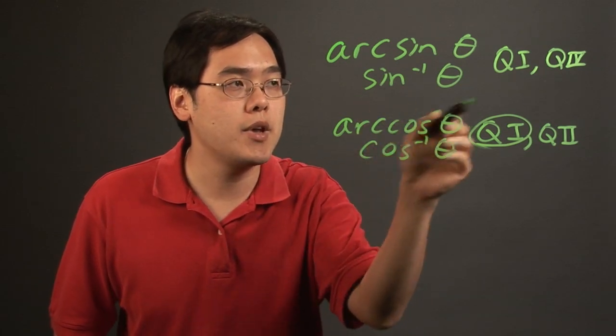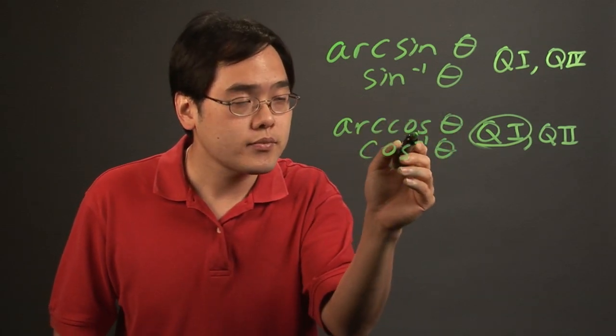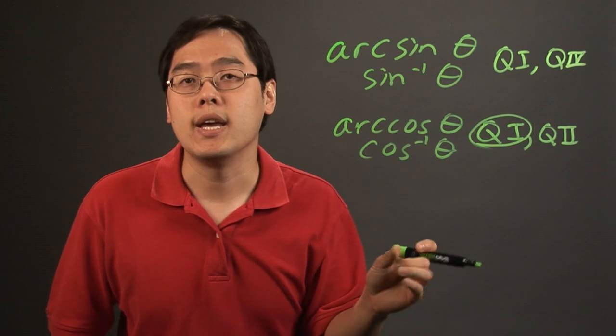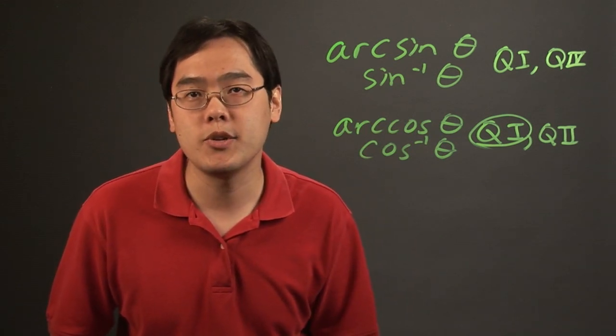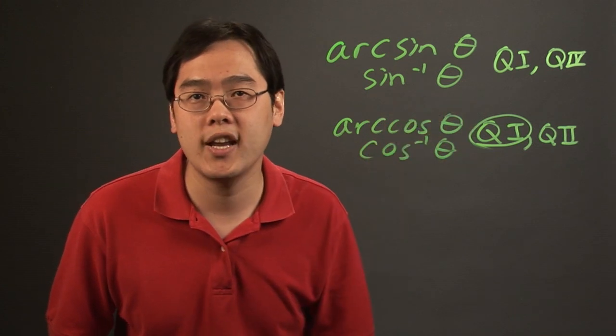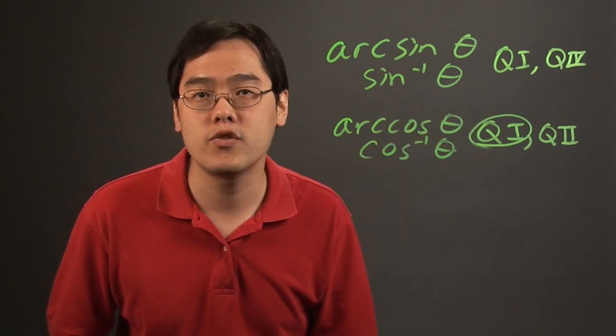So understanding and keeping in mind the definitions, you can plug in the values and it'll give you one answer, but it'll be up to you to find the other answer. So I'm Jimmy Chang, and that's how to find the arc sine and arc cosine using quadrants and angles.